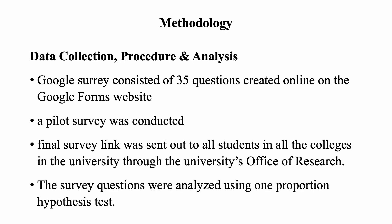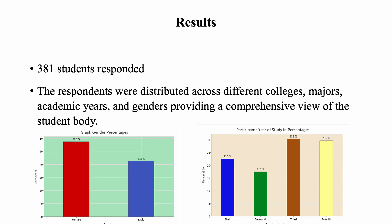For the data collection and procedure, we had a link to a Google survey which was sent to third-level students in an English-medium private university in the UAE. It was administered in English and consisted of 35 questions. The survey was created on the Google Forms website, and the link was shared with all students through the university's office of research, after completing the IRB and going through all of that procedure. We conducted a pilot study on the survey with students to improve the wording and content before sending it officially to the four different colleges or schools in the university. The survey was administered randomly to 381 students, distributed across different colleges, majors, academic years, and genders.